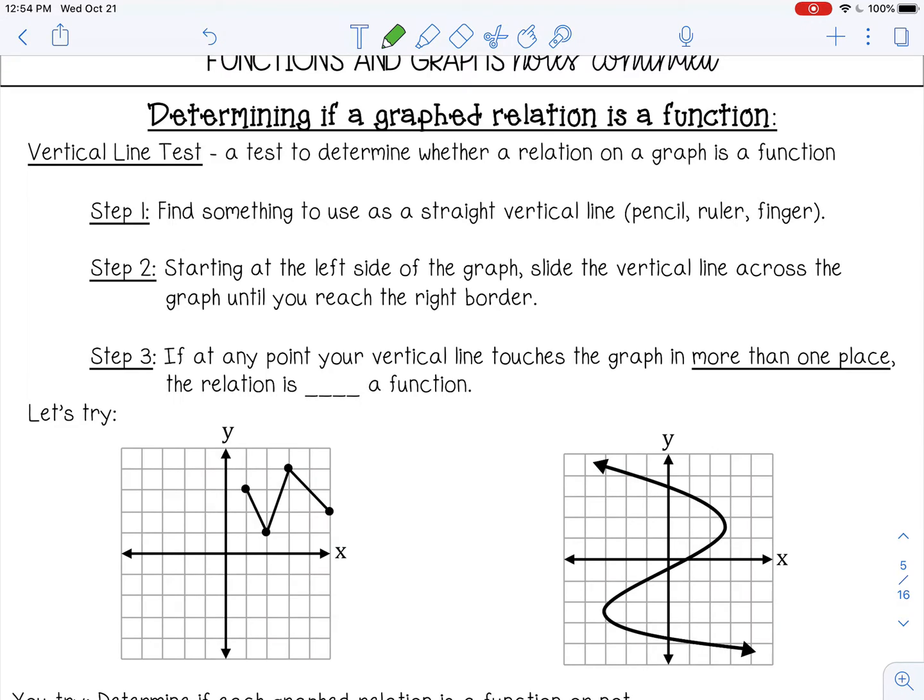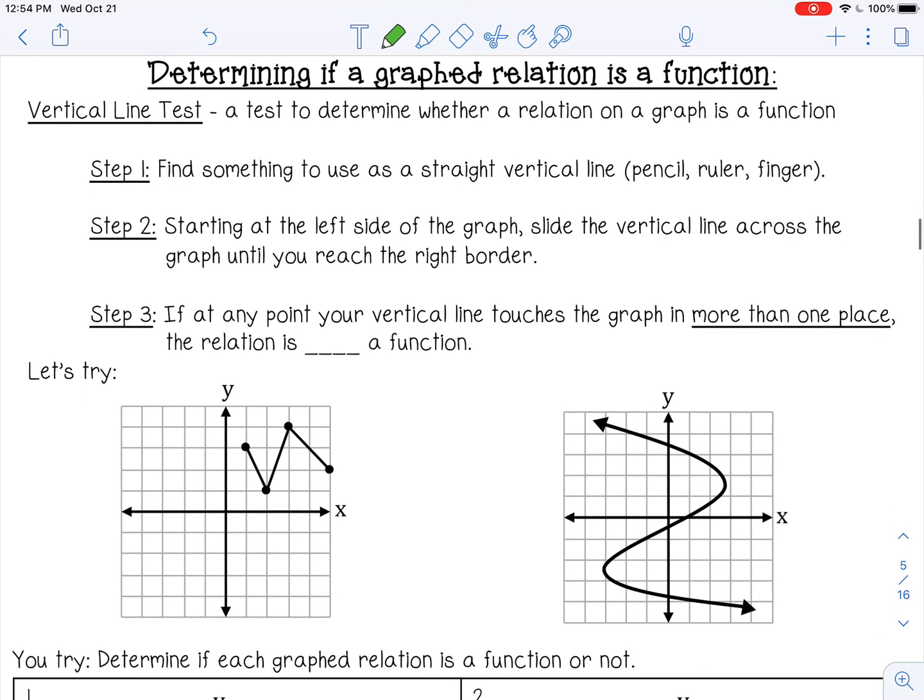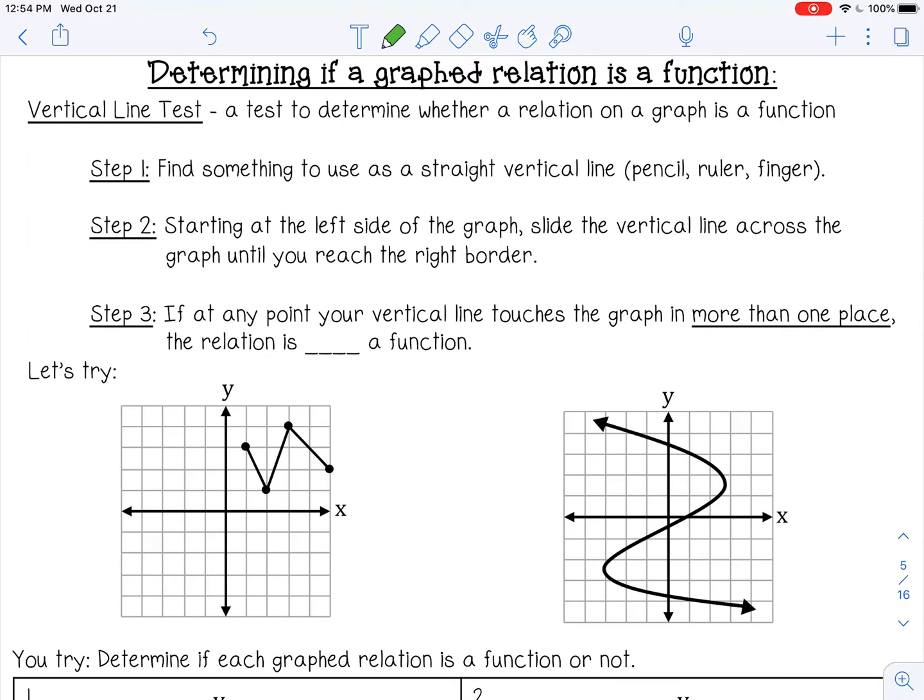There's something called the vertical line test, a test to determine whether a graph relation is a function. Find something to use as a straight vertical line, your pencil, a ruler, or your finger. Start at the left side of the graph and slide the vertical line across the graph until you reach the right border. What we're looking for is, does the line ever touch the graph in more than one place? If it does, the relation is not a function.